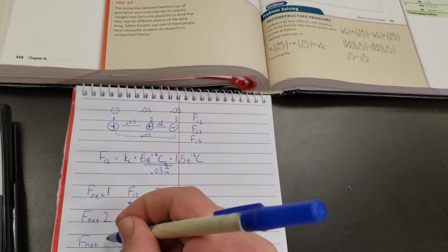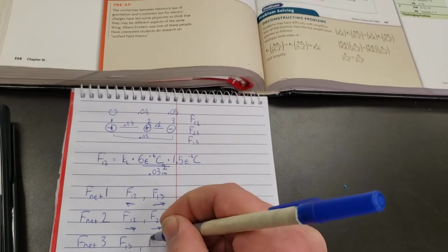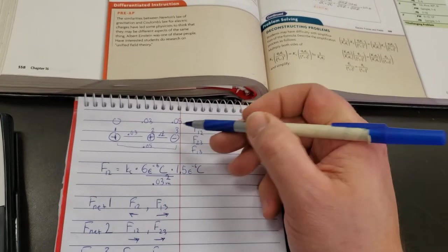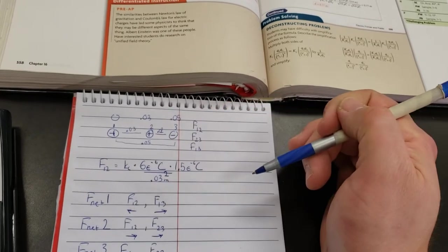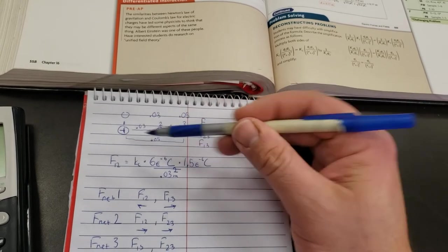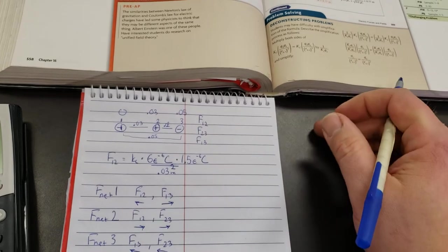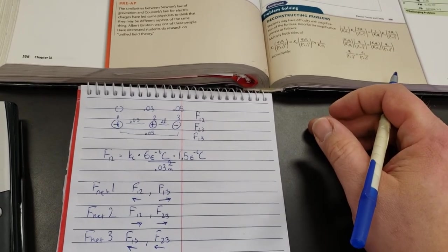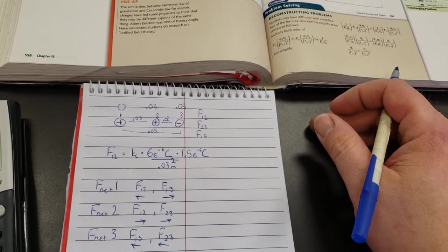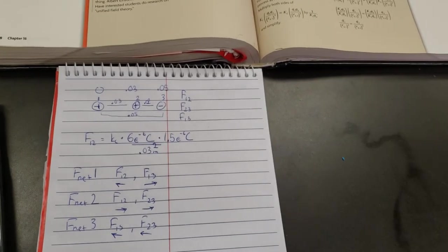And then for the net force on number 3, it'll be forces 1, 3 and force 2, 3. So number 3, they're both positive, and it's over here. So 2 is going to pull it to the left, and 1 will pull it to the left. So number 3 is being pulled to the left by both of those, and so you'll add them up in that case. And that's just how you go about solving these problems.